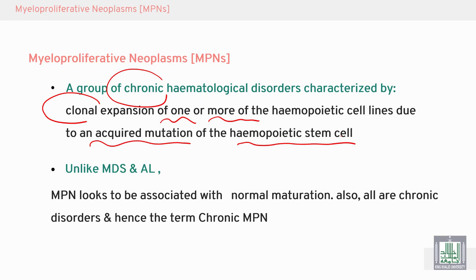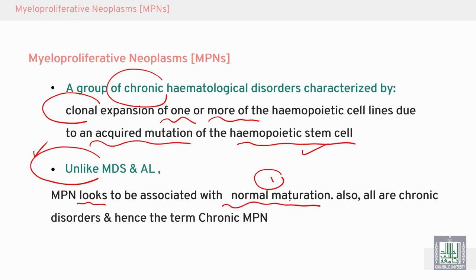In this definition we find features similar to acute leukemia — acquired mutation of the hematopoietic stem cell — but MPN, unlike acute leukemia or MDS, is associated with normal maturation. There is no arrest of maturation like in acute leukemia, and no abnormal maturation like in MDS. Also, all MPNs are chronic disorders.